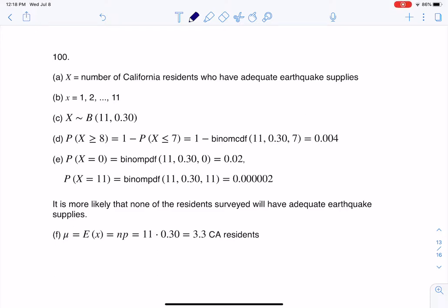Hey, Math 43, I had a question coming out of chapter 12, number 100, and here we were told that it's been estimated that only about 30% of California residents have adequate earthquake supplies.